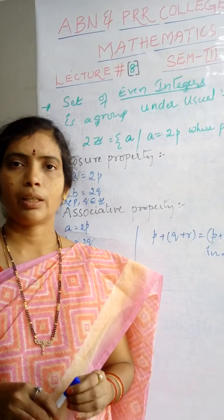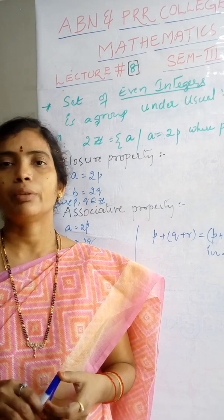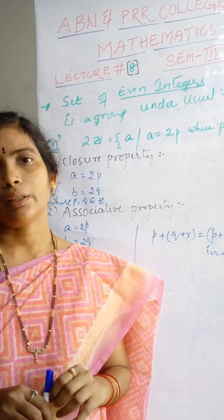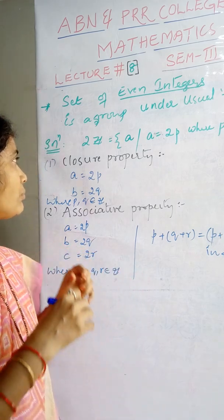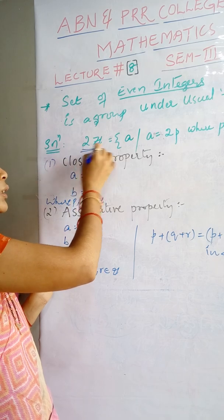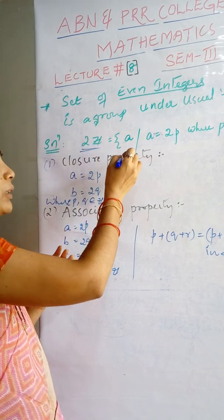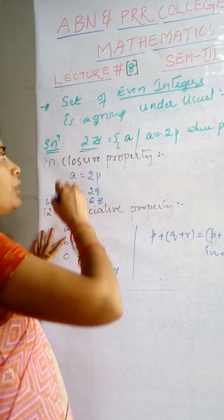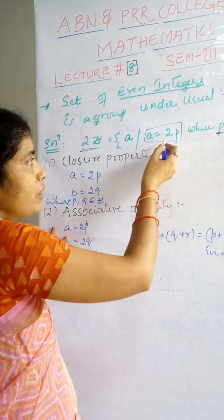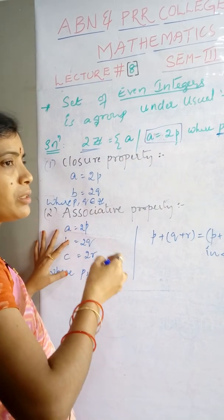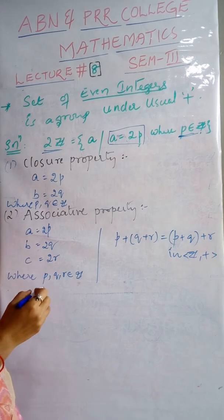Good morning. In the last class we got the example of a group that is nothing but a set of integers under usual addition. Now we are going to discuss whether the set of even integers under usual addition is a group or not — very important for your examination. The set of even integers is indicated by 2Z, meaning multiples of integers. Two multiples of integers are nothing but even integers.